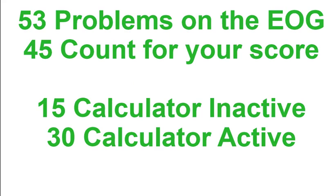For the sixth grade math EOG, there are 53 problems on the test. You have three hours to do 53 problems — that's about three minutes per question. 45 of those problems count towards your score; the other eight are field test items, kind of like practice questions the state uses to see whether they're good questions to use in the future. Of the 45 that count, 15 are calculator-inactive and 30 are calculator-active.